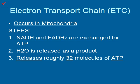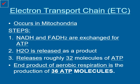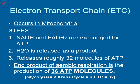This process releases roughly 32 molecules of ATP. If we go ahead and combine that with the two we made from the Krebs cycle and the two we made from glycolysis, the end result of aerobic respiration is 36 molecules of ATP. We got two molecules from glycolysis, two molecules from the Krebs cycle, and the electron transport chain gave us roughly 32 — so the whole process gives us a net gain of roughly 36 molecules of ATP.